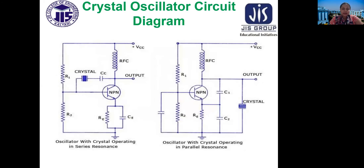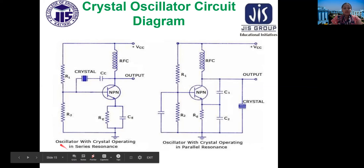In the crystal oscillator circuit diagram, two biasing resistors are present with the crystal material, along with a choke. An NPN transistor is connected with a biasing resistor and a capacitor in parallel with RD and CE. A coupling capacitor connects to the transistor in common emitter mode and the output is taken from the coupling capacitor. In the parallel resonance configuration, the crystal, capacitor, and coupling capacitor are connected in parallel.